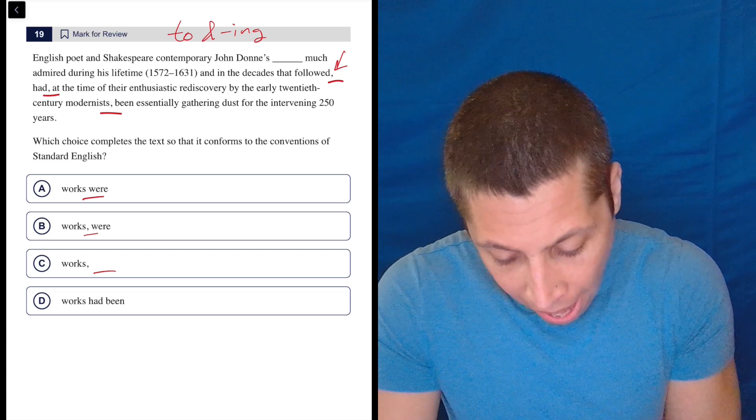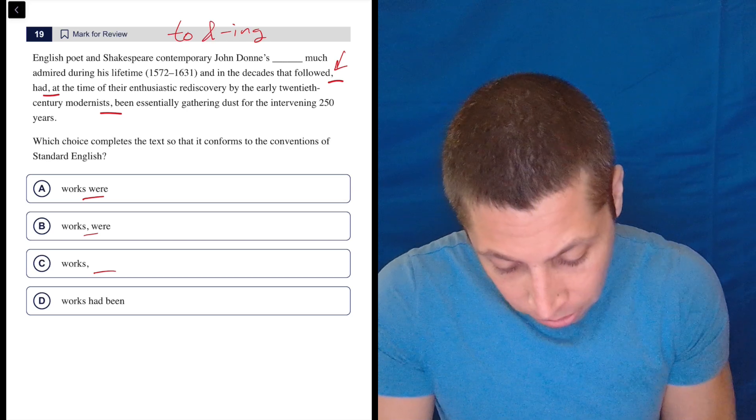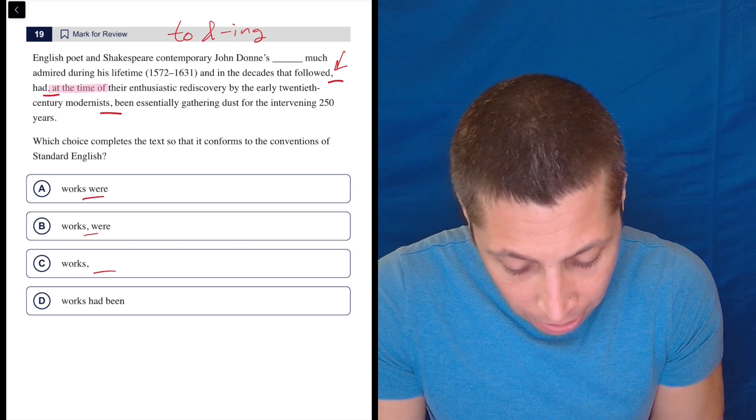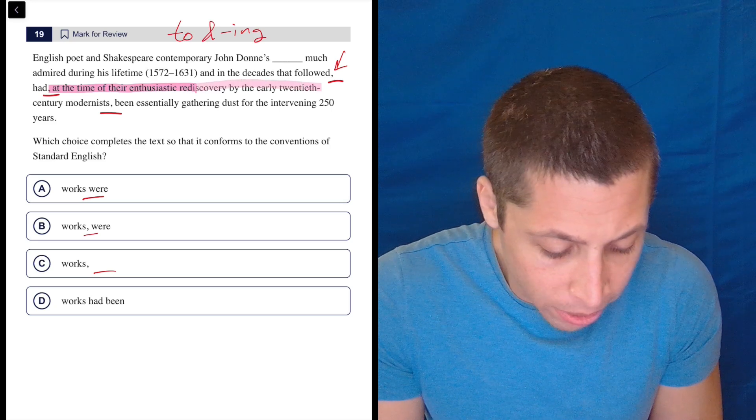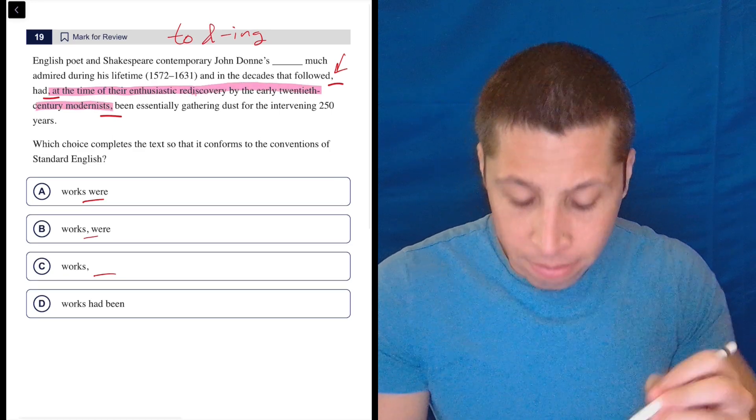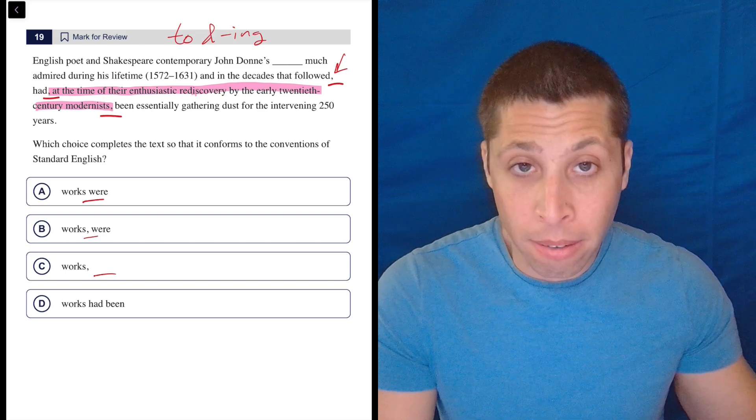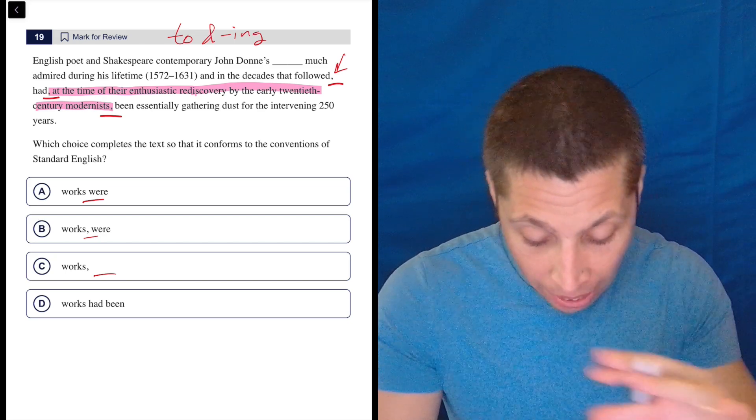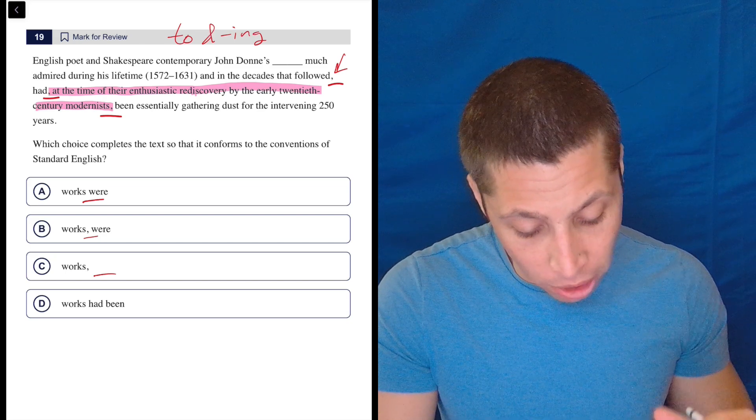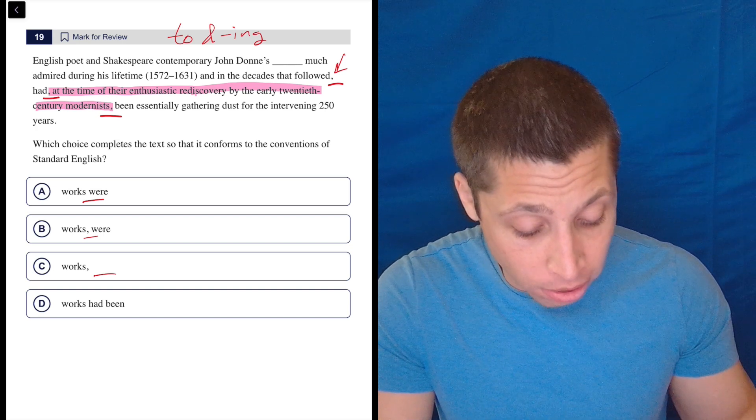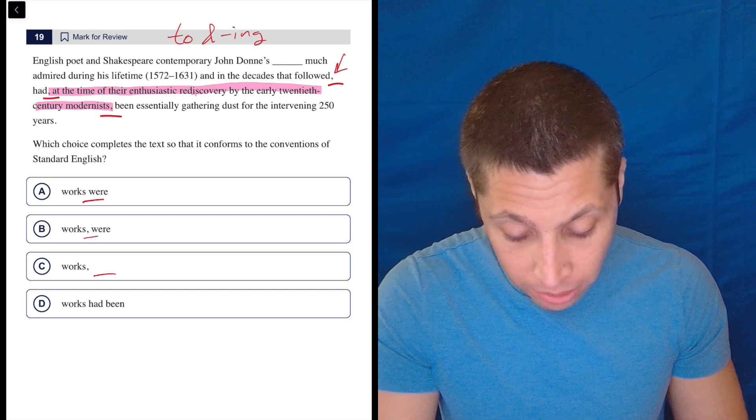So we've got to think about what's going on. Well, I see right away that now that the two commas here, these commas starting here and continuing on are adding in an extra interruption. So let's remove that. Had been essentially gathering. That's how this is supposed to flow. So English poet and Shakespeare contemporary John Donne's works had been essentially gathering dust for the intervening 250 years.